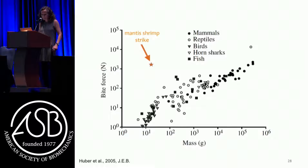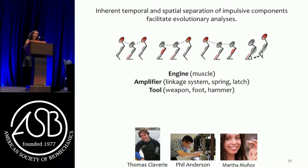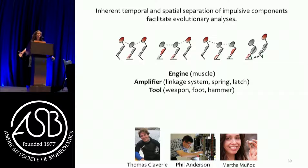Extreme impulsive performance slows down evolutionary change. One of the things I'm absolutely obsessed about is understanding the connection between physics and evolution. One of the reasons I moved into impulsive systems and invertebrates is it allows us to look at what's happening with the evolution of a spring under different selection pressures, different ecologies, and different performance needs. Impulsive systems give us a way to study the evolutionary dynamics of mechanical components because they tend to be spatially and temporally separated - tracking energy exchange between a muscle and a spring in a cyclic highly efficient system is insanely difficult because they're so tightly coupled.